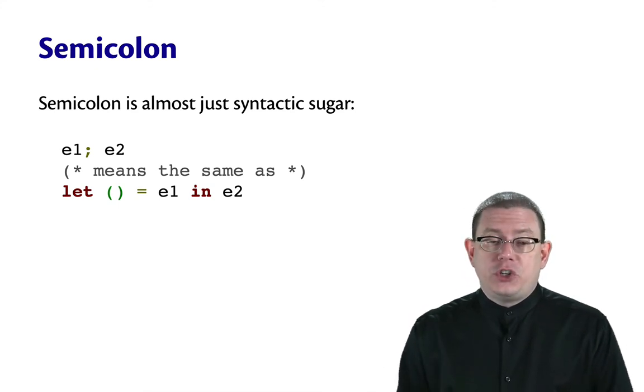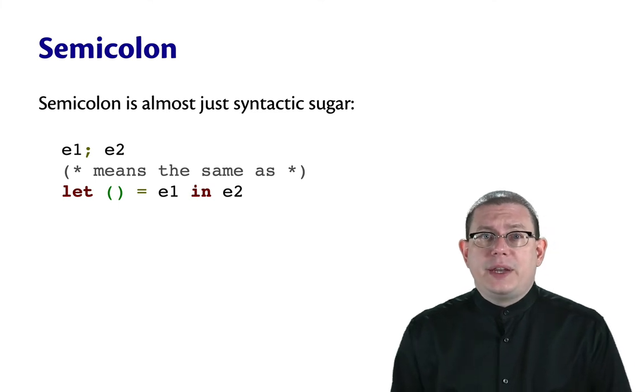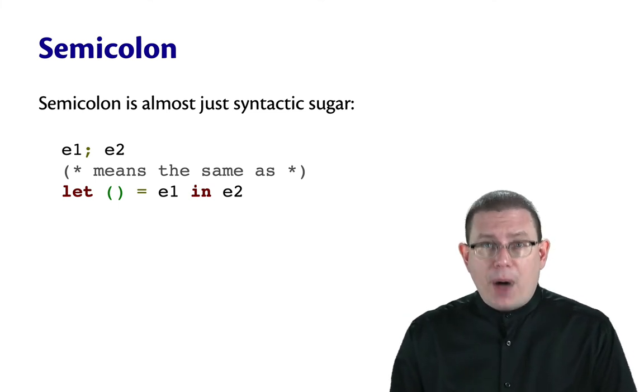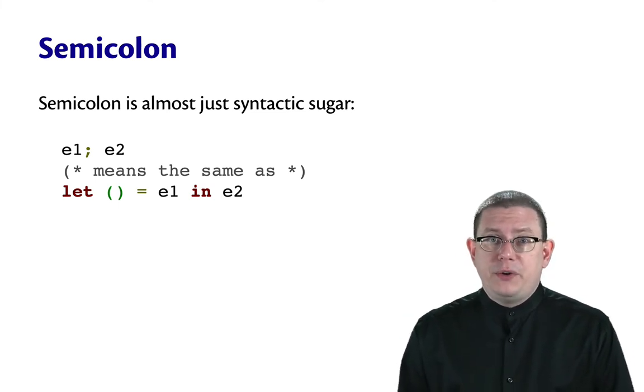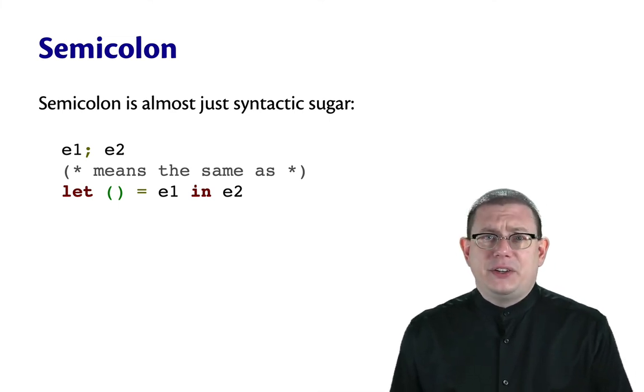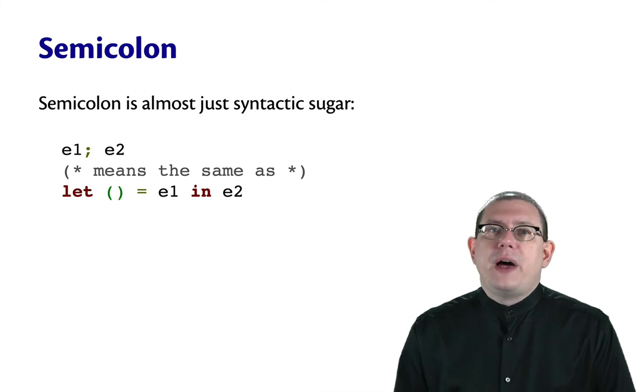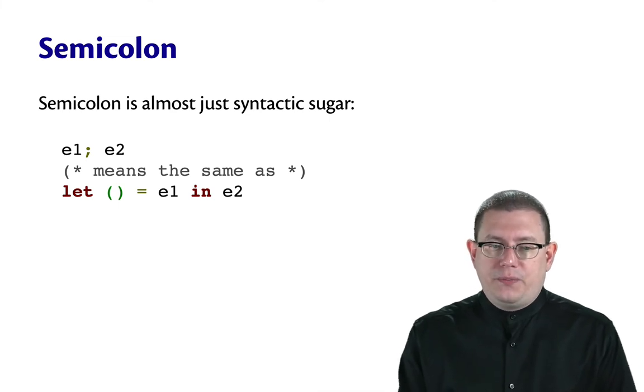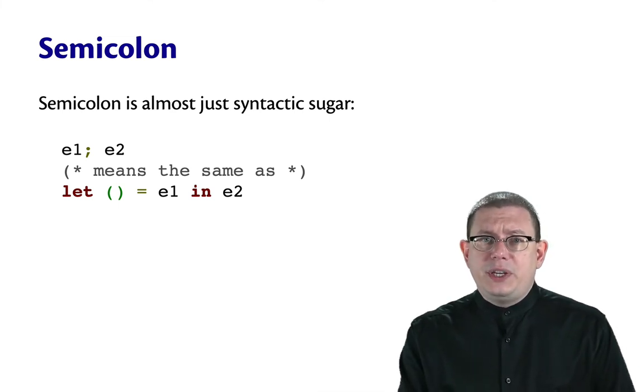What would that let expression do? Well, you know how to evaluate let expressions. You'd evaluate the binding expression E1 to a value. Then we would be pattern matching against that to get the unit value out. That's not interesting. And then continue evaluating the body expression E2. That's really what E1 semicolon E2 does as well.